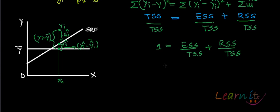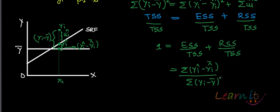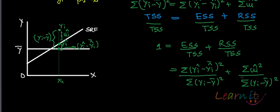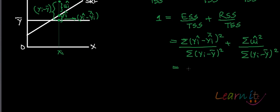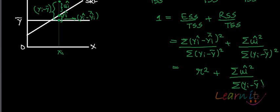You can write this as: summation of (yi-hat minus yi-hat-bar)-squared upon summation of (yi minus y-bar)-squared, plus summation of ui-hat-squared upon summation of (yi minus y-bar)-squared, equals 1. The first ratio, ESS/TSS, is R-squared.